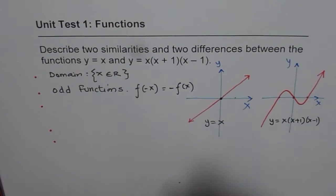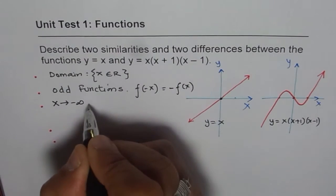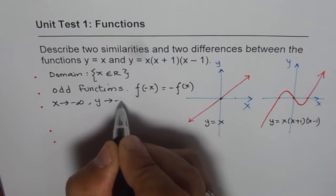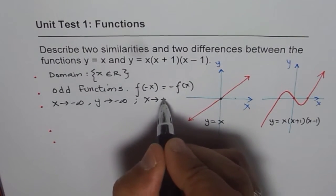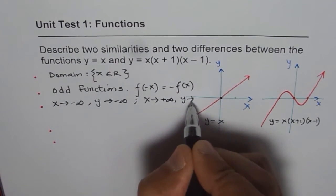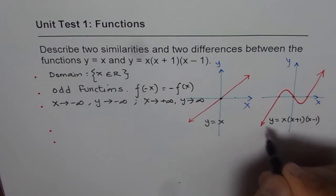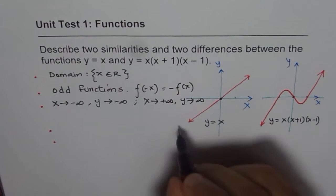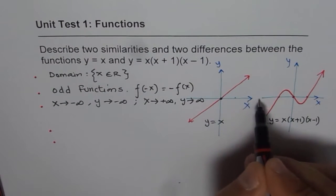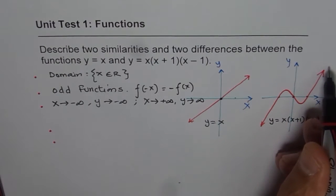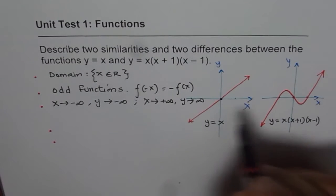End behavior really means as x approaches minus infinity, y approaches minus infinity. And for the other one, as x approaches positive infinity, y approaches positive infinity. As x approaches minus infinity, y approaches minus infinity for both of them. As x approaches positive infinity to the right, y approaches extreme infinity upwards positive infinity.